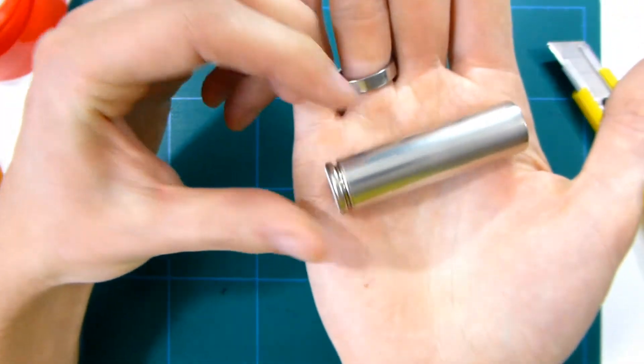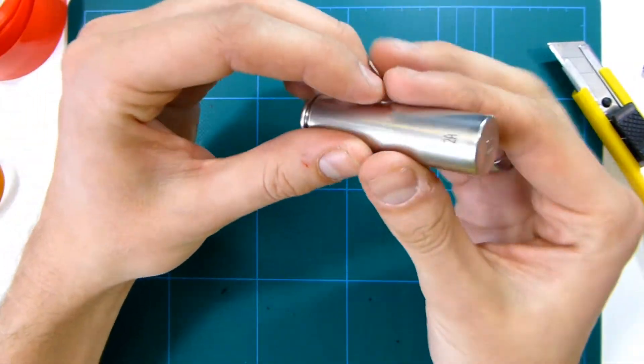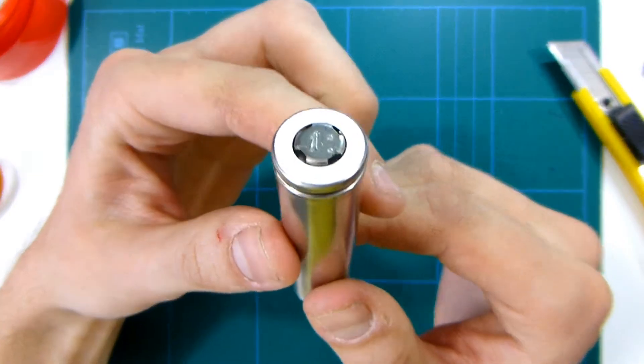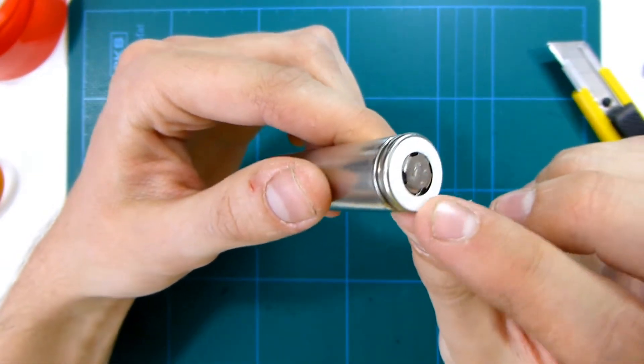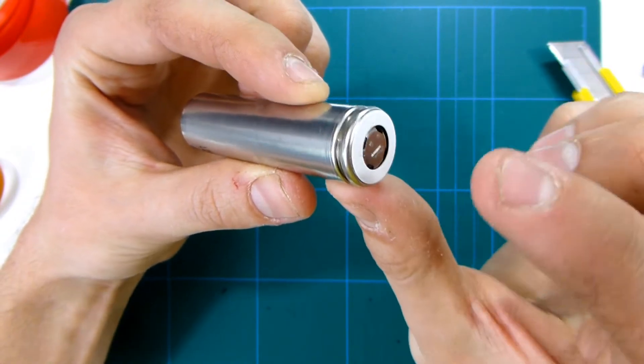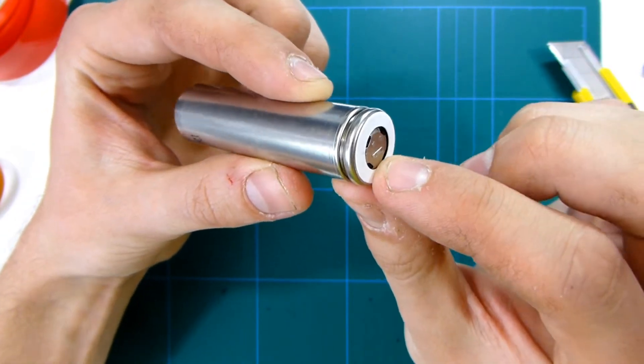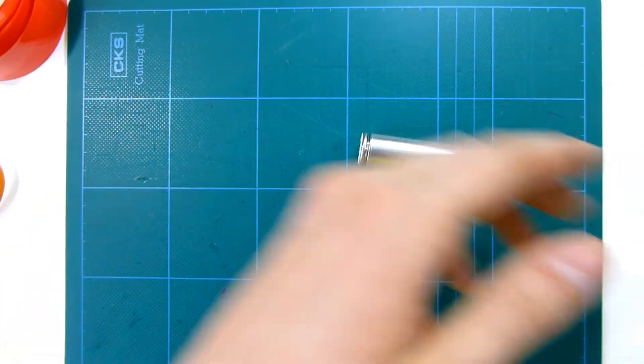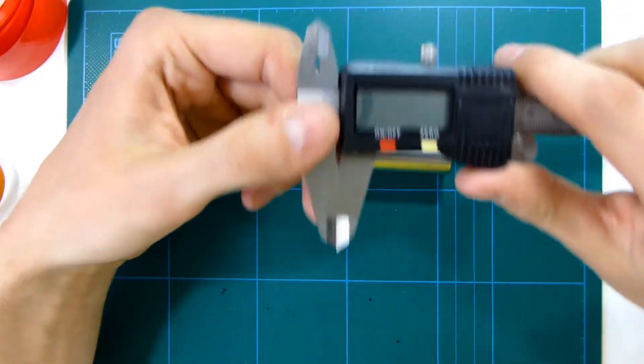So this is what it looks like without having any protection circuit. All of this is your negative and up here is positive. This one was actually good because some of these the protective sleeving isn't stuck on properly so it just falls off and it's a bit of a hassle to keep it in place when shrinking.